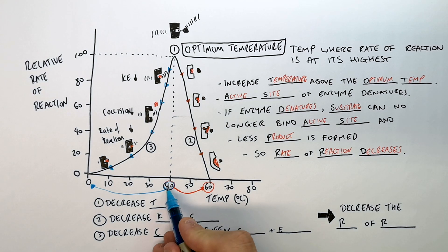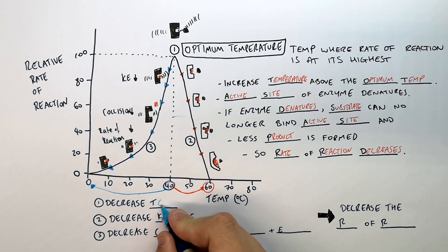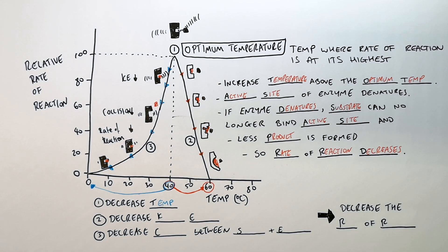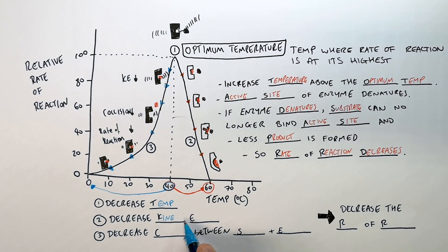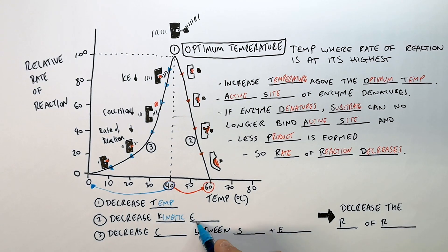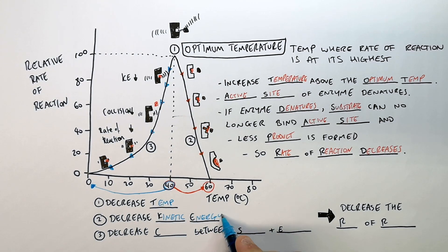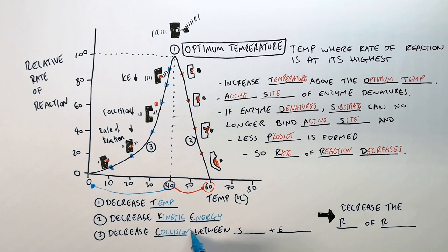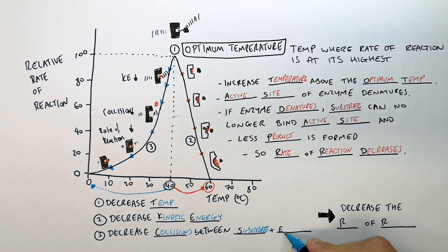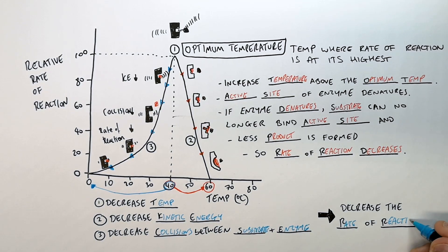As you decrease the temperature, you're decreasing the kinetic energy, therefore you decrease the collisions between the substrate and the enzyme, therefore you decrease the rate of reaction.